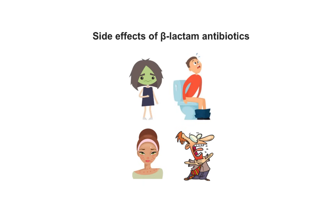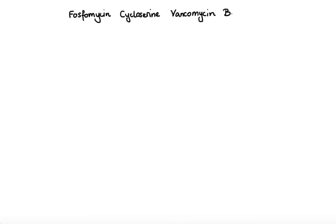Beta-lactams are not the only antibiotics that interfere with synthesis of the bacterial cell wall. Four other antibiotics you may frequently encounter — namely fosfomycin, cycloserine, vancomycin, and bacitracin — also disrupt cell wall synthesis, though through a different mechanism. To better understand how these antibiotics work, we need to take a closer look at the enzymatic steps involved in cell wall synthesis.